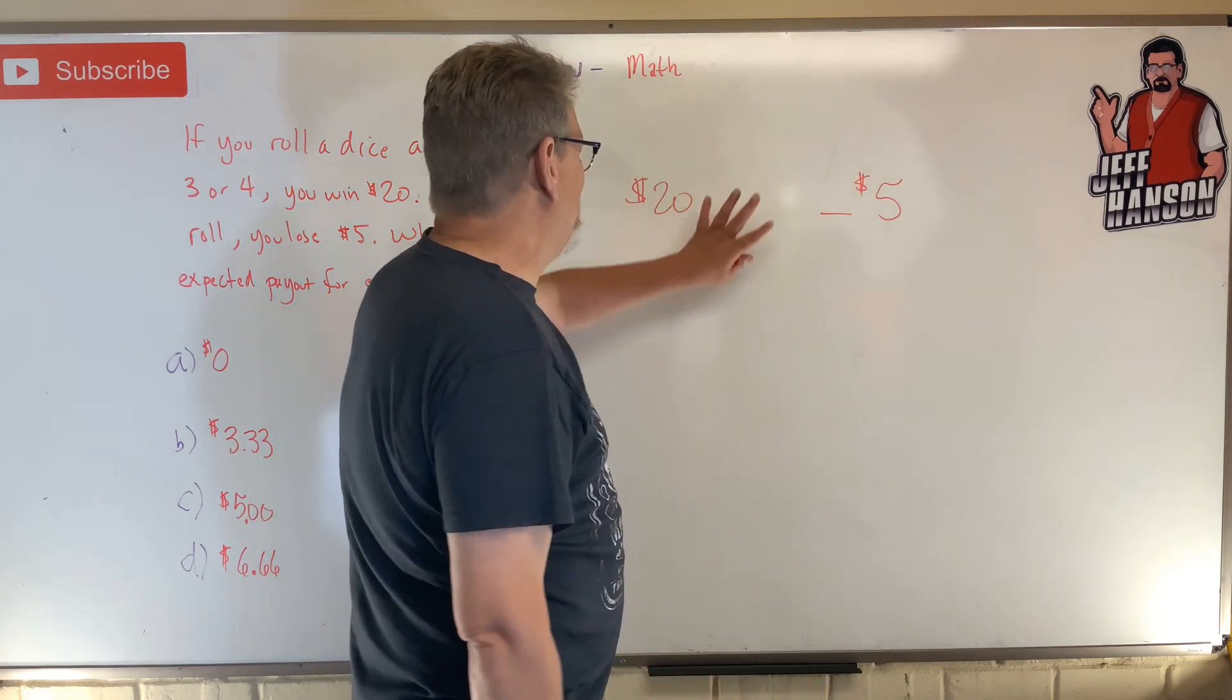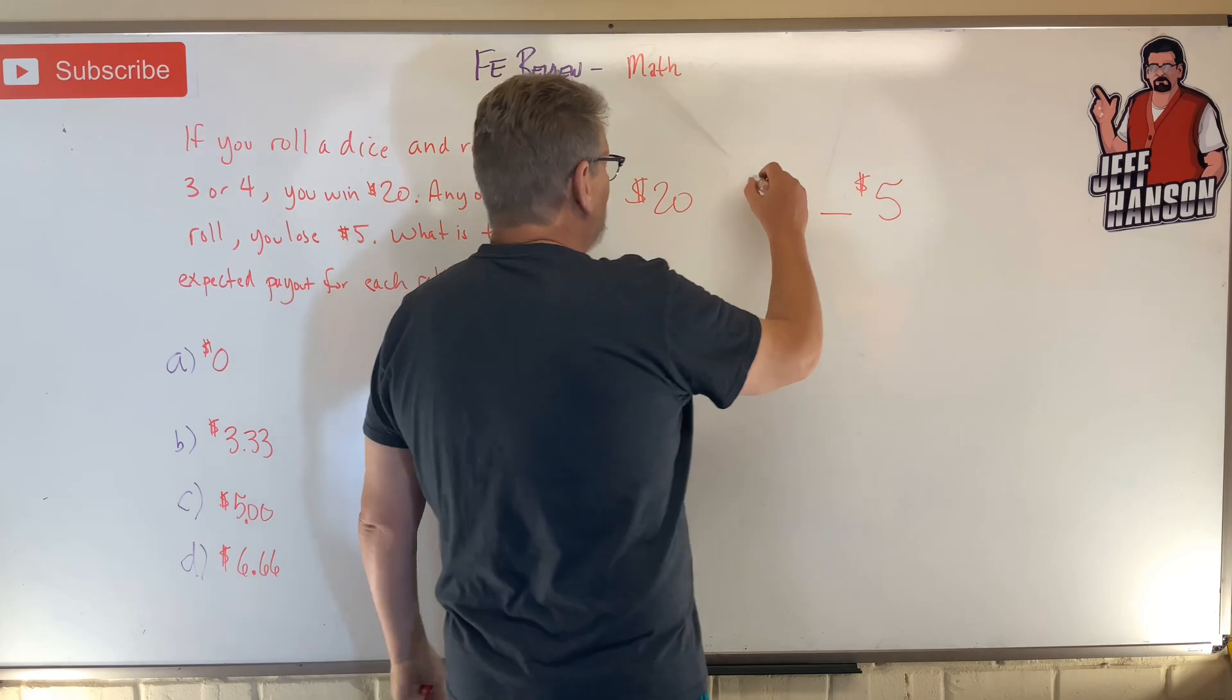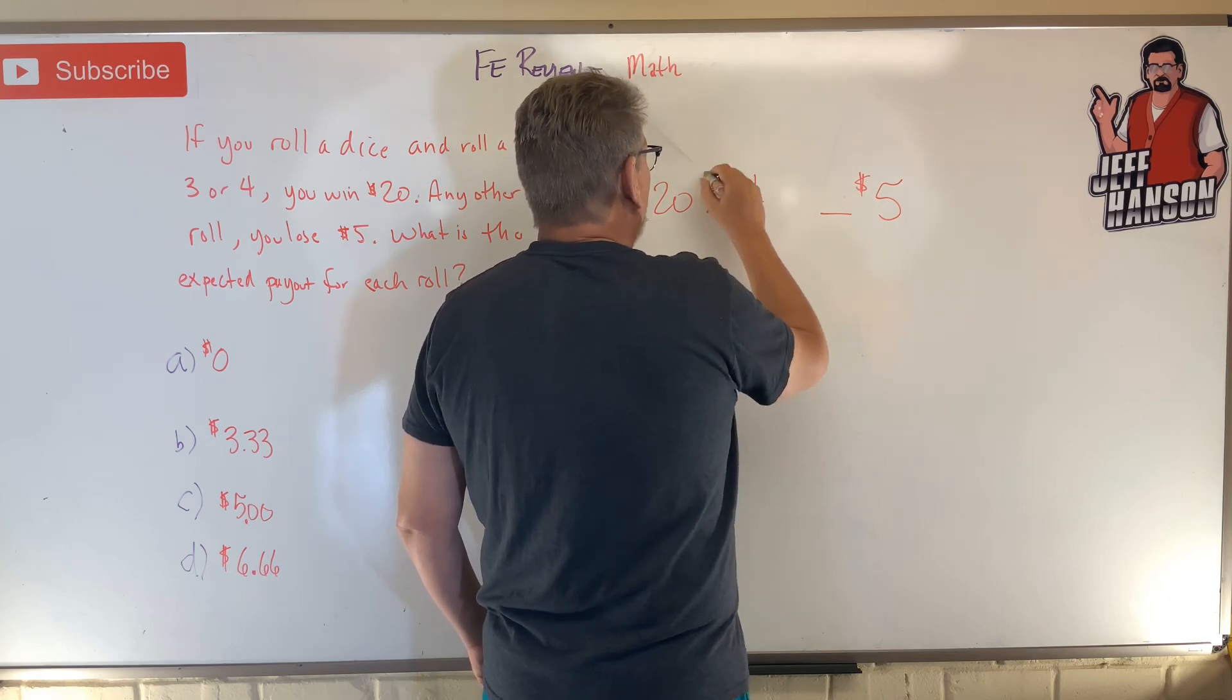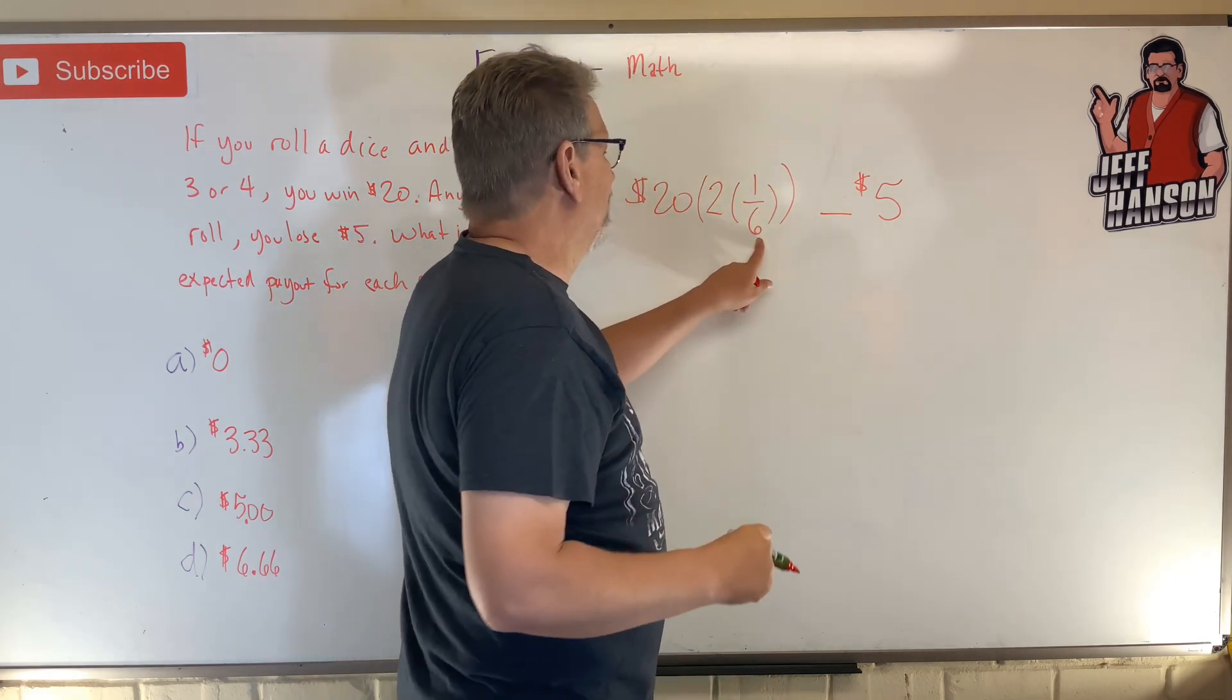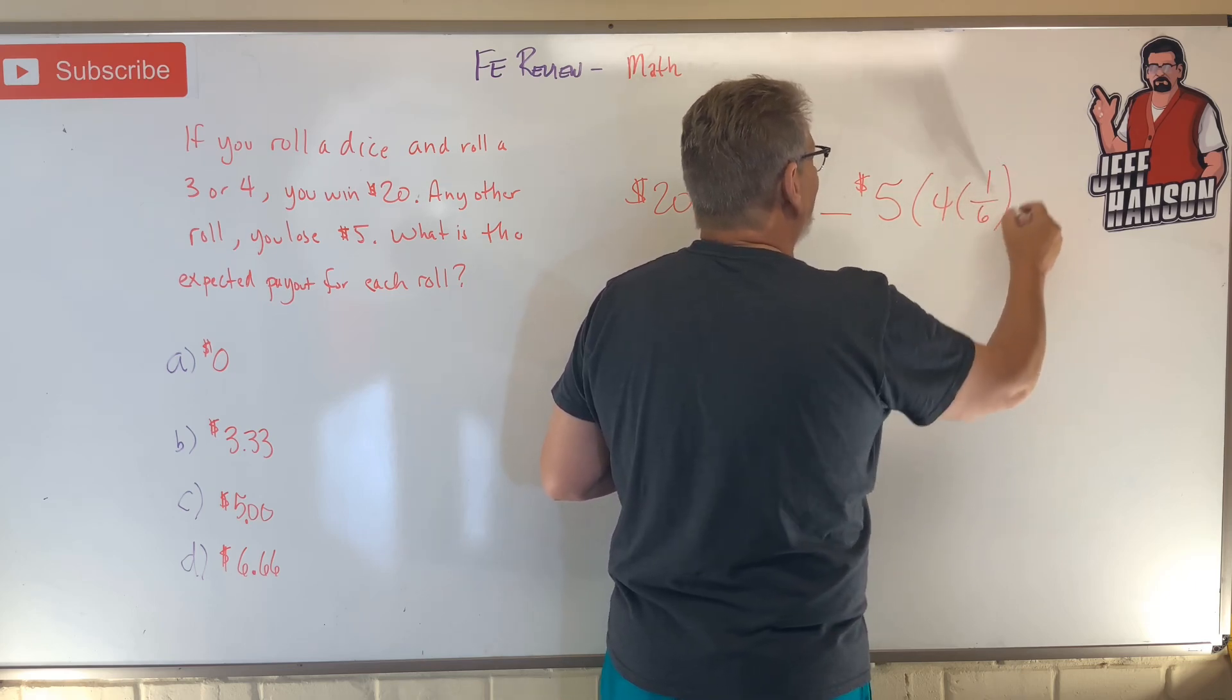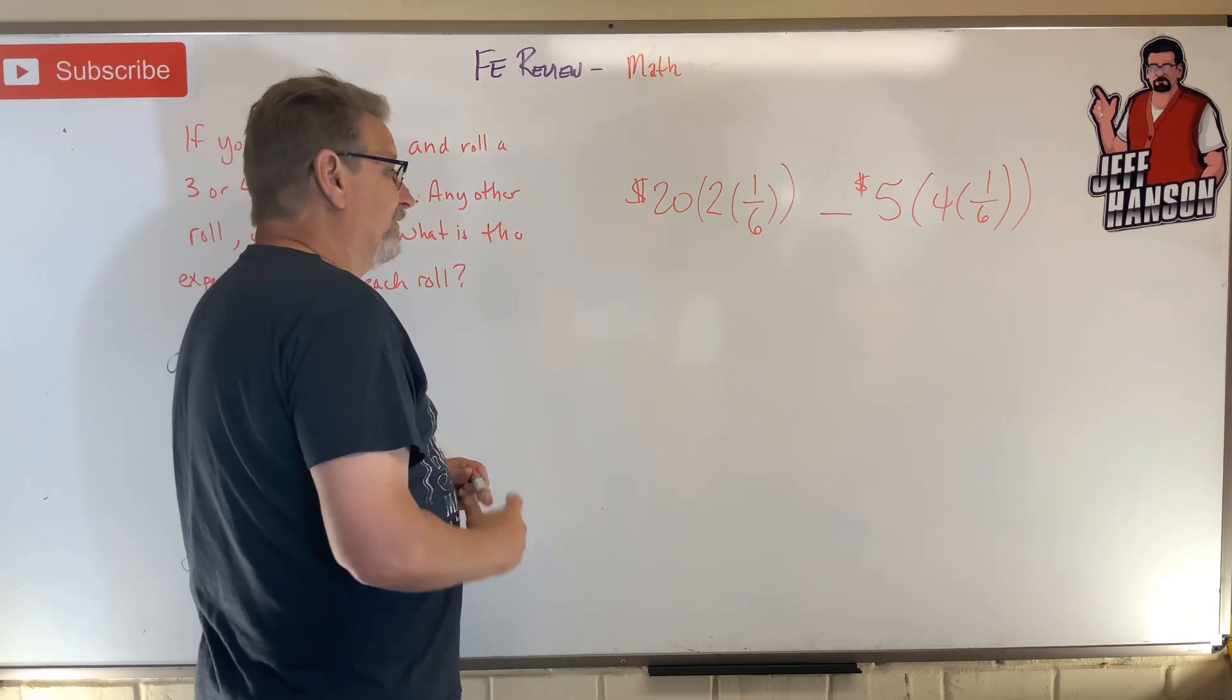So what's the chances of us losing $5? Well, the chances of us rolling a winner is two out of six, right? You can think of it like this: I have two chances out of six. And then over here I have four chances out of six. It works either way. You can say two out of six or four out of six.